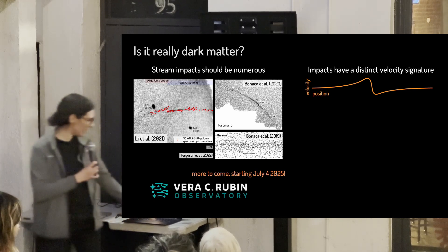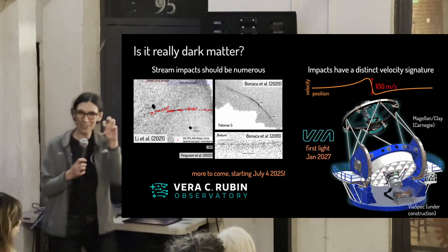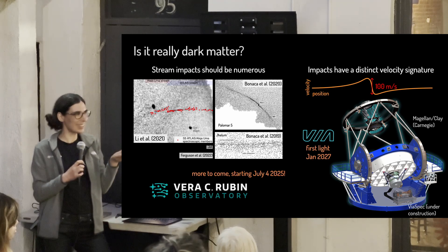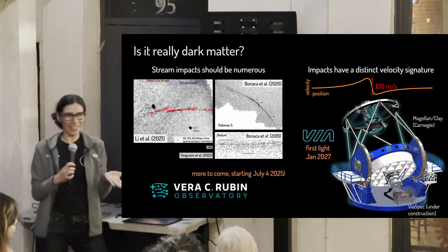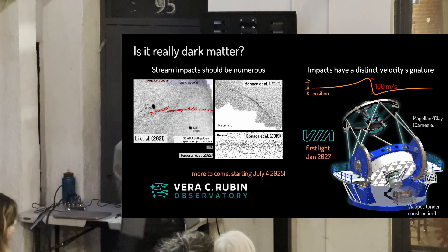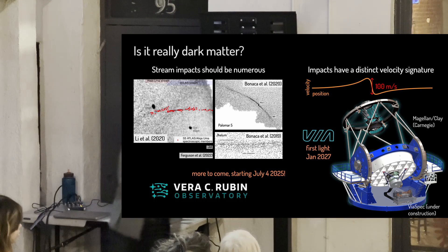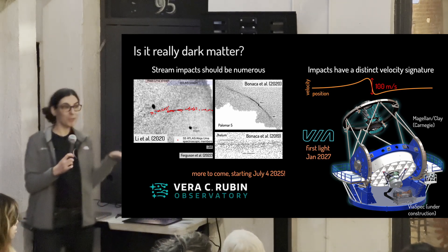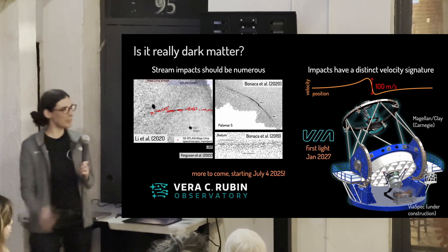What about the velocities? The signature is very small for low-mass clumps — on the order of 100 meters per second. Our current precision in measuring velocities is 10 times worse, which means we need to build a new instrument. That's something we are now doing at Carnegie Observatory. Here is one of our telescopes, the Magellan Clay in the Atacama Desert in Chile, shown with a new instrument under construction called VIA-SPEC, which is part of the VIA project. We hope to have first light in January 2027, and shortly after, hope to give you an update. Thank you.